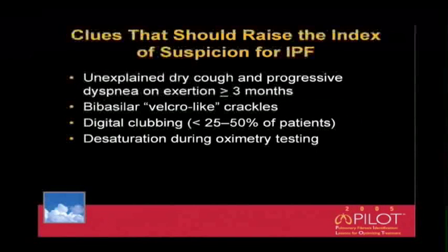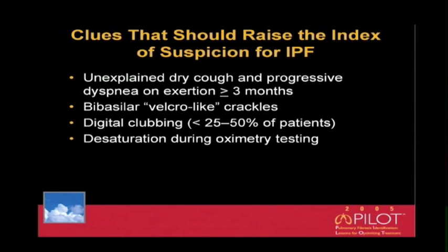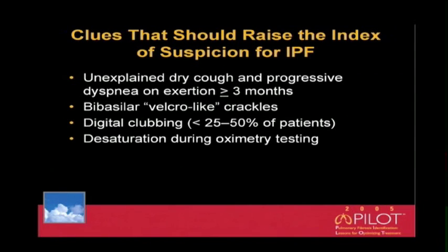Key clues raising suspicion for IPF include an unexplained dry cough and progressive dyspnea on exertion lasting at least three months, bi-basal Velcro-type dry crackles, digital clubbing — which occurs in 25 to 50 percent of patients — and desaturation during oximetry testing.